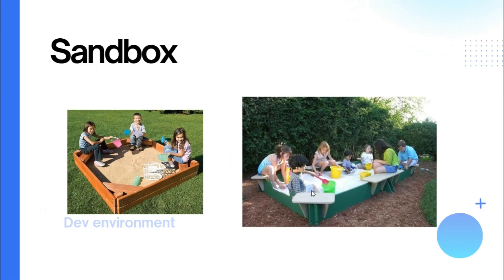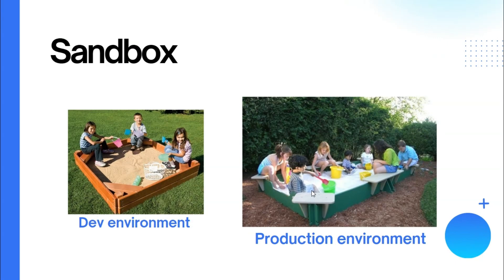Next we want to talk about the sandbox. There is a difference between the production environment and the development environment, as you can see in the pictures. In the development environment, the workflow is quite different — we need to create an API user, create an API key, and then generate a token. In the production environment, we are already provided with an API key and a token we can use to make safe requests. The sandbox lets us test the application and understand how it works before jumping into production.